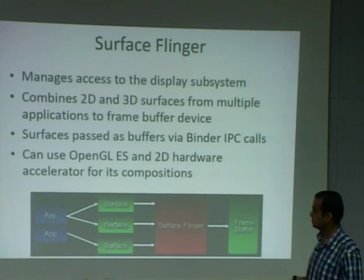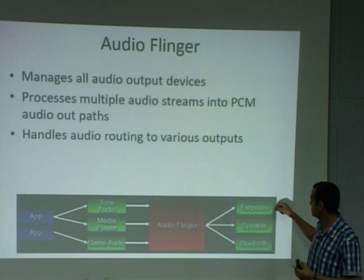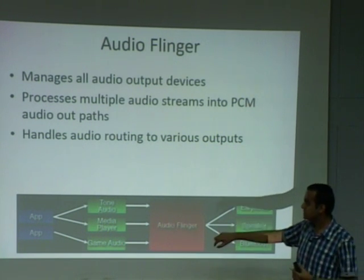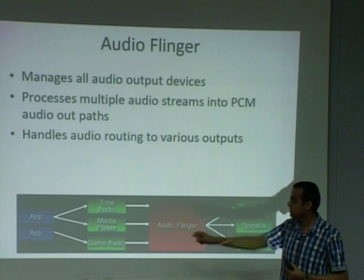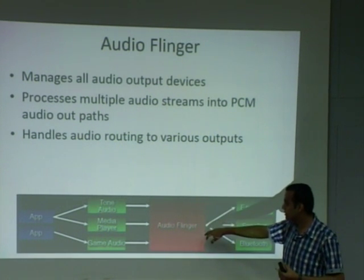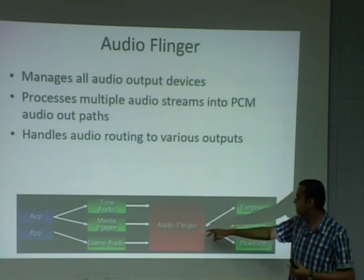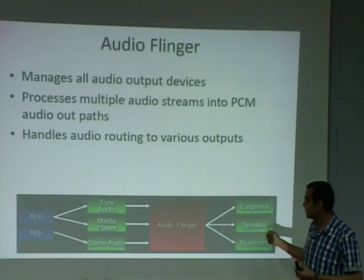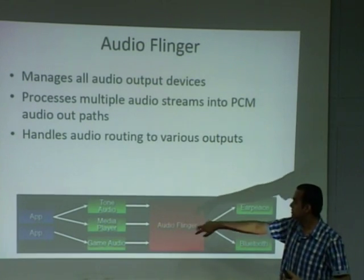The last part is audio flinger. Audio can be heard from the earpiece, headphones, speakers, or Bluetooth. Multiple apps running simultaneously can connect to the media player or game audio. Multiple inputs can be passed to audio flinger, and it routes the output accordingly — for example, if an earphone is plugged in, audio flinger sends output to the earphone; if speakers are on, it sends to the speakers. It manages audio output devices and supports multiple input and output paths.